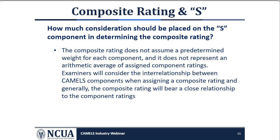How much weight should be placed on the S component in determining the composite rating? The weight attributed to any individual component in determining the composite rating should vary depending on the degree of supervisory concern associated with the component. The composite rating does not assume a predetermined weight for each component and does not represent an arithmetic average. For most credit unions in which market risk is not a significant issue, examiners would place much less weight on the S component than on other components in determining a composite rating.